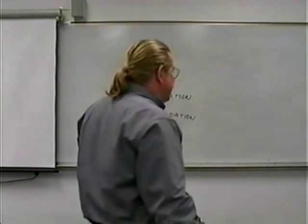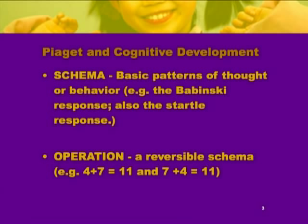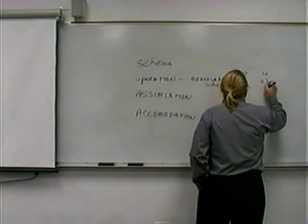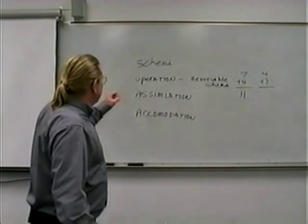An operation is a reversible schema. One of the stages will be pre-operational, so keep that in mind because it's talking about pre-logic. When you and I were little kids doing math problems, you'd finally come to a problem like 7 plus 4 is 11, figure it out, and then look at the next problem and see 4 plus 7 and think, oh no, not another problem. This would be somebody who was pre-operational and didn't understand that this is a reversible schema. These are two of the exact same problems, of course.